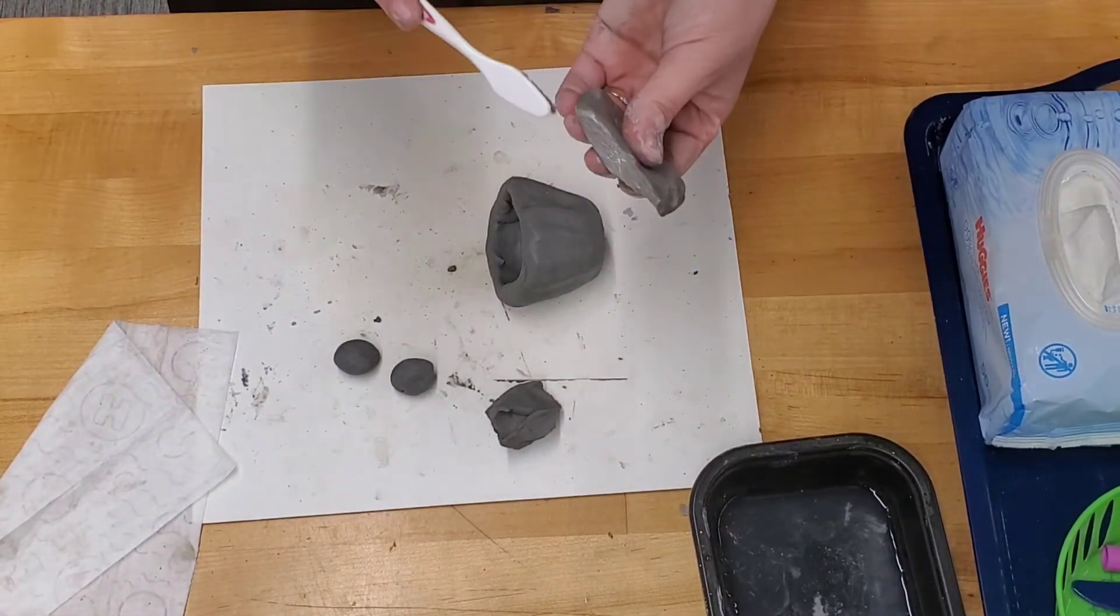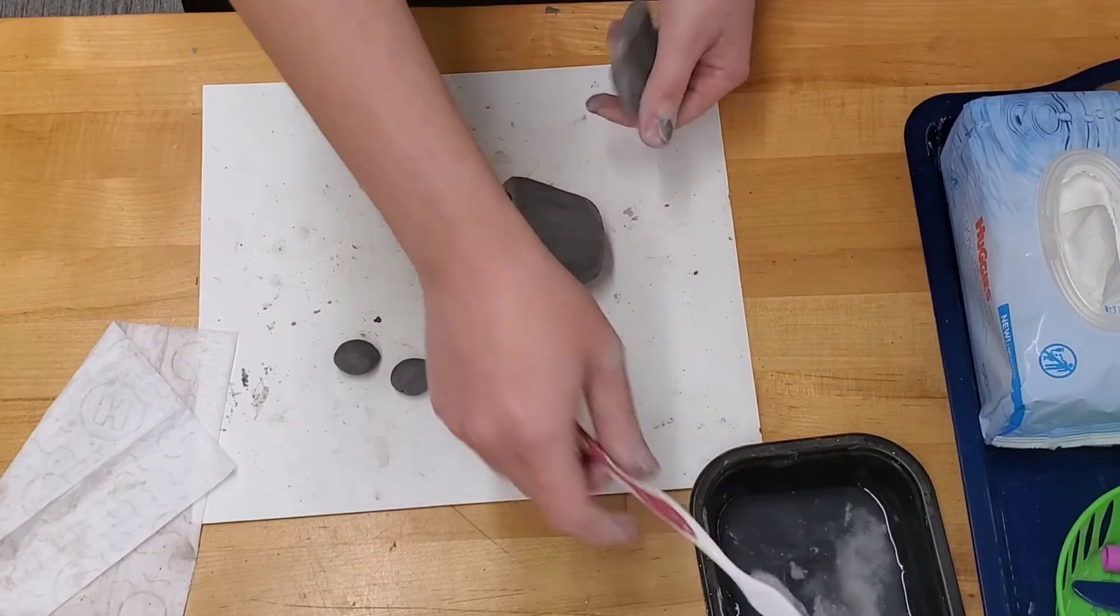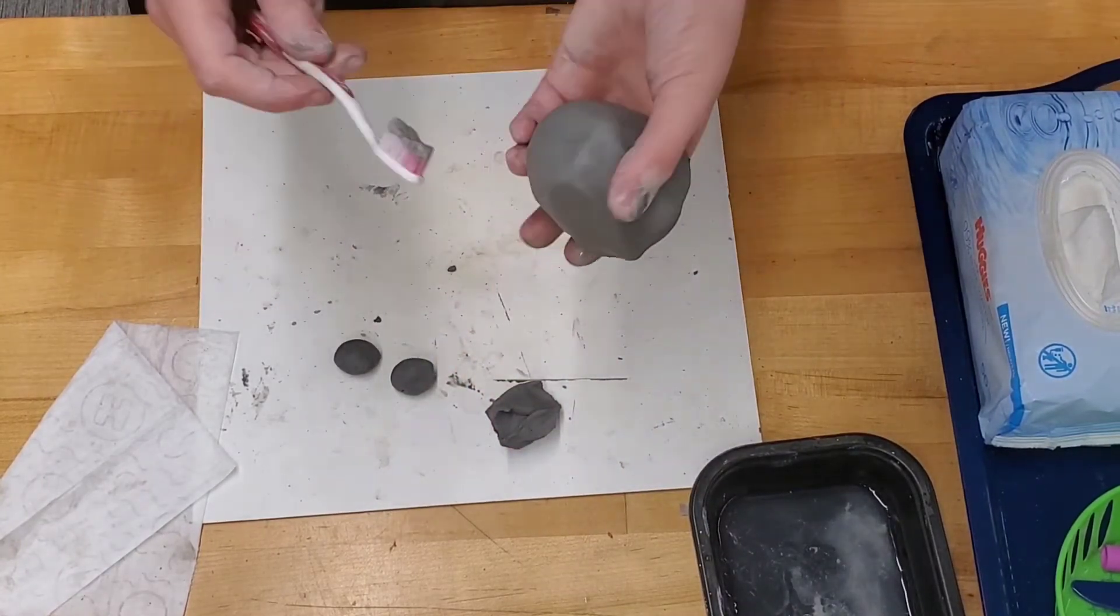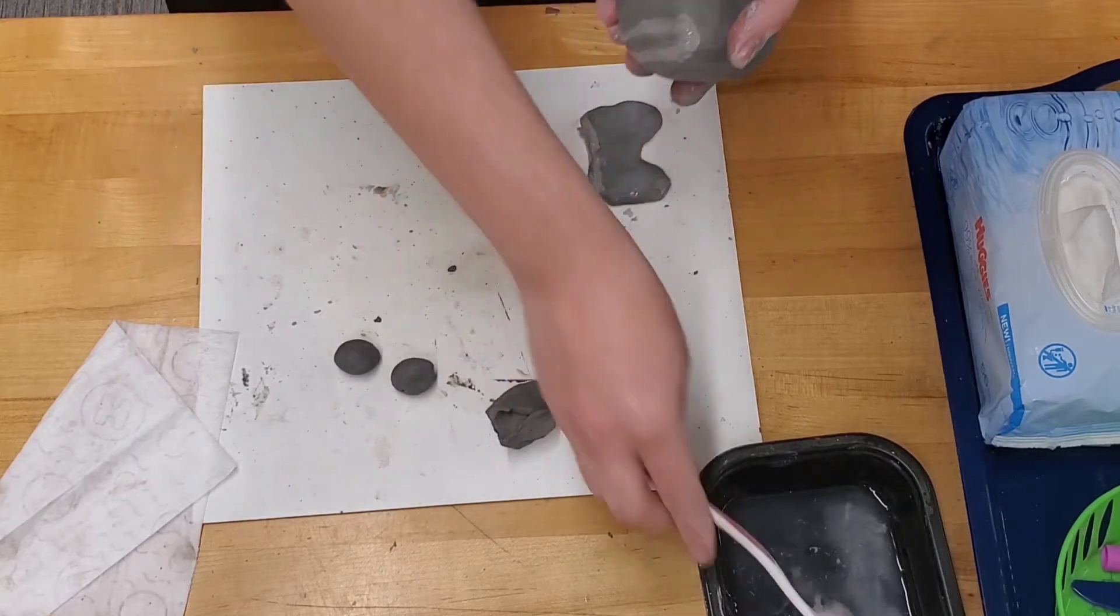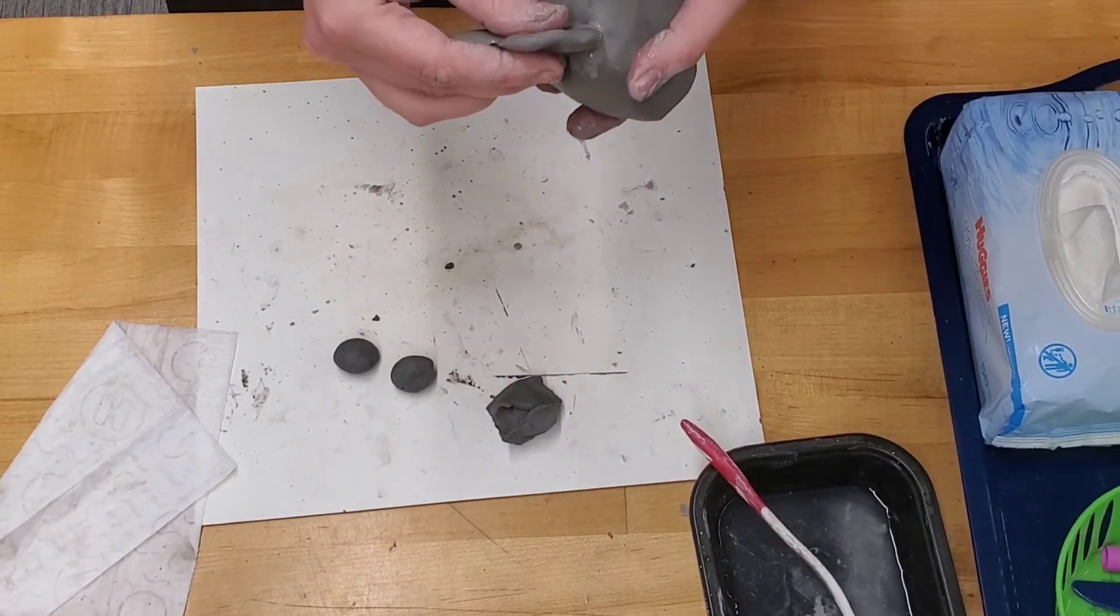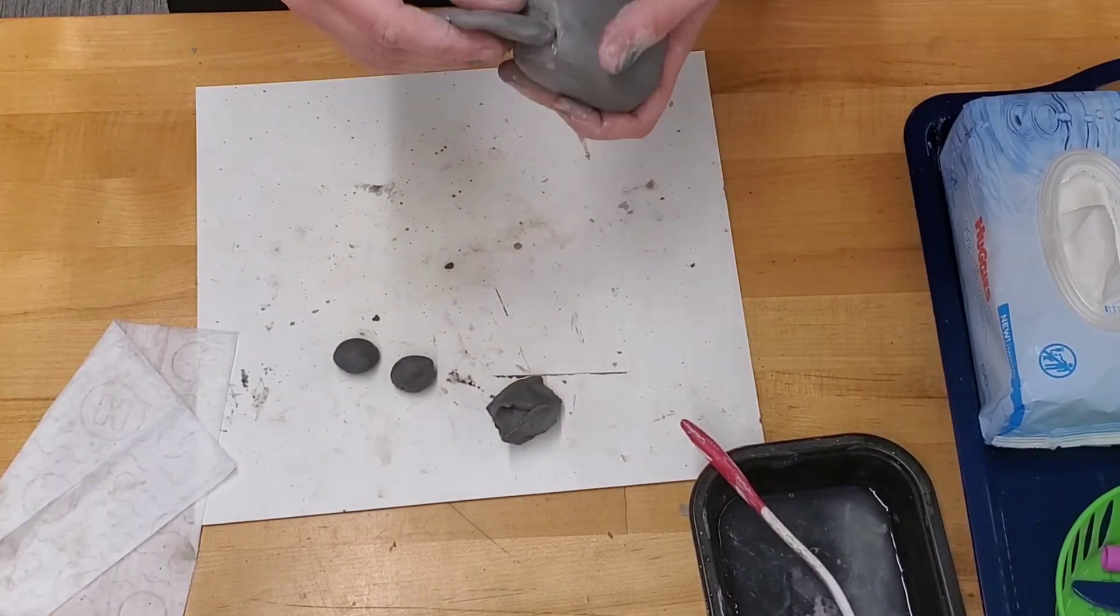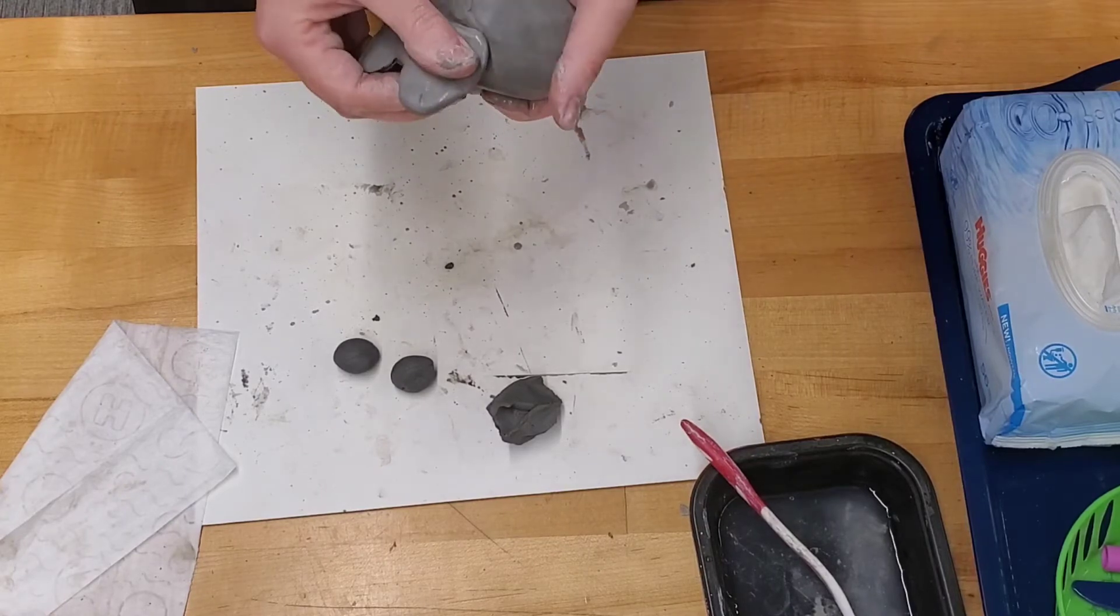To join pieces of clay together, score it with the bristles of the toothbrush on both sides, making small cuts. Push the pieces together and smooth out those edges.